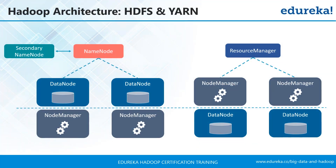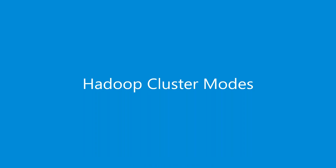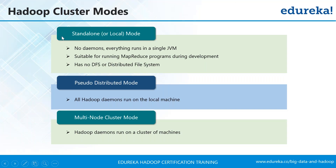YARN also runs background daemon processes on each data node. Hadoop supports horizontal scaling — when you exhaust the resources of a particular machine, you add more machines to the cluster rather than vertically scaling a single machine. In production environments, Hadoop runs in multi-node cluster mode.